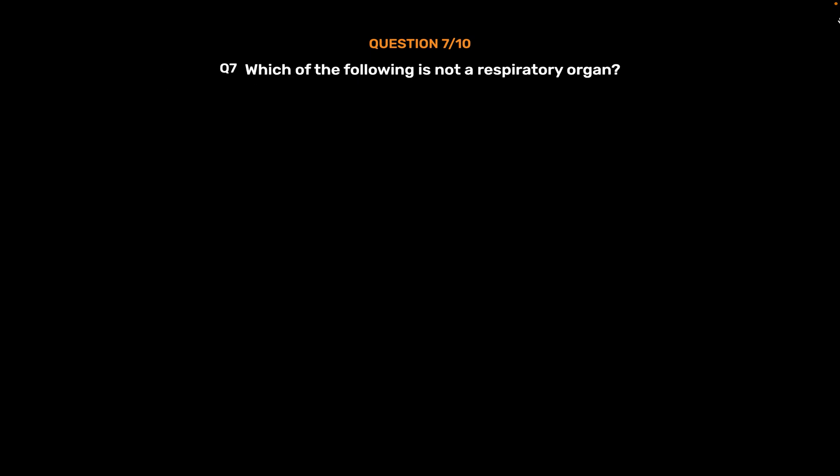Question 7: Which of the following is not a respiratory organ? Option A, Skin; Option B, Gills; Option C, Trachea; Option D, None of these.